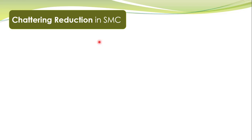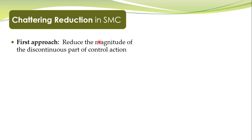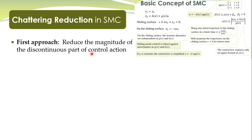In previous lectures we have talked about sliding mode control and we learned that there is one disadvantage: it is associated with the chattering problem. Chattering is generally undesirable, but fortunately there are some approaches which can be utilized to reduce or eliminate it. In today's lecture we shall study two different approaches for chattering reduction. The first approach is to reduce the magnitude of the discontinuous part of the control action, since chattering in sliding mode control is due to this discontinuous controller.